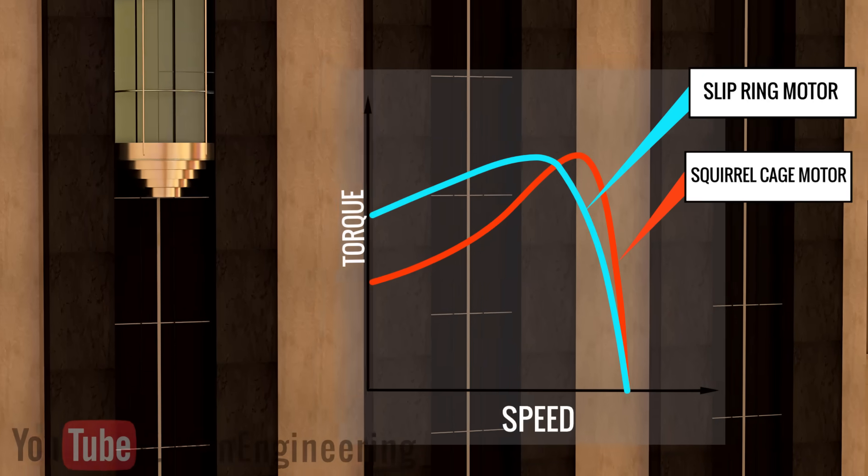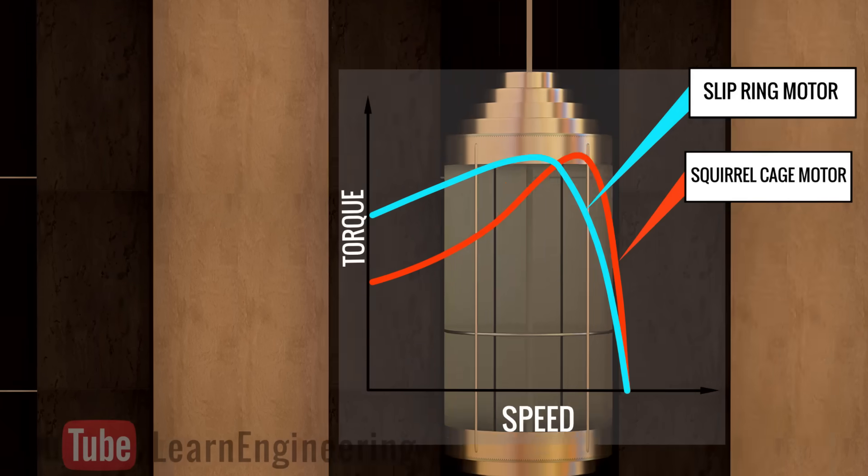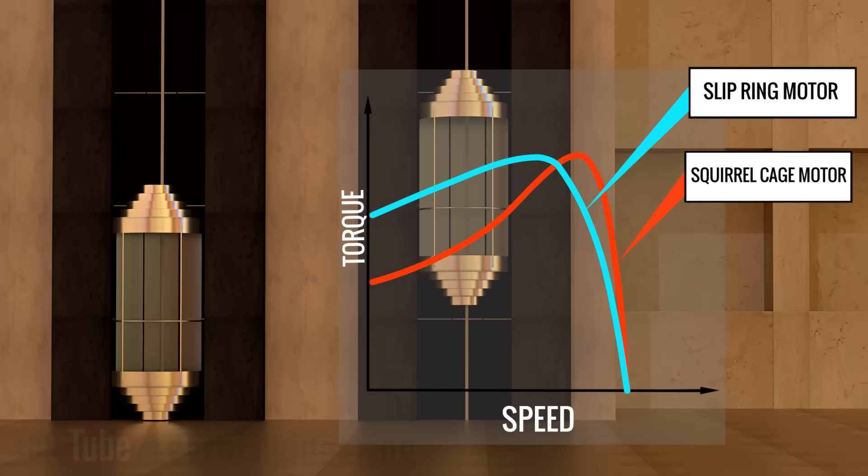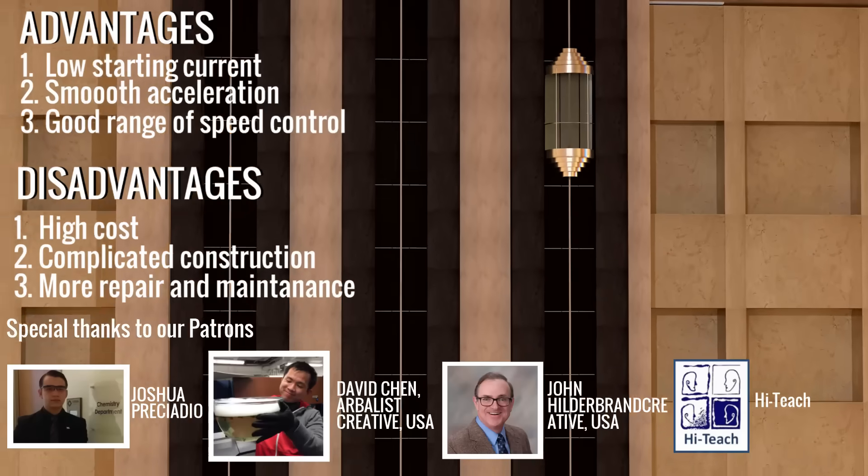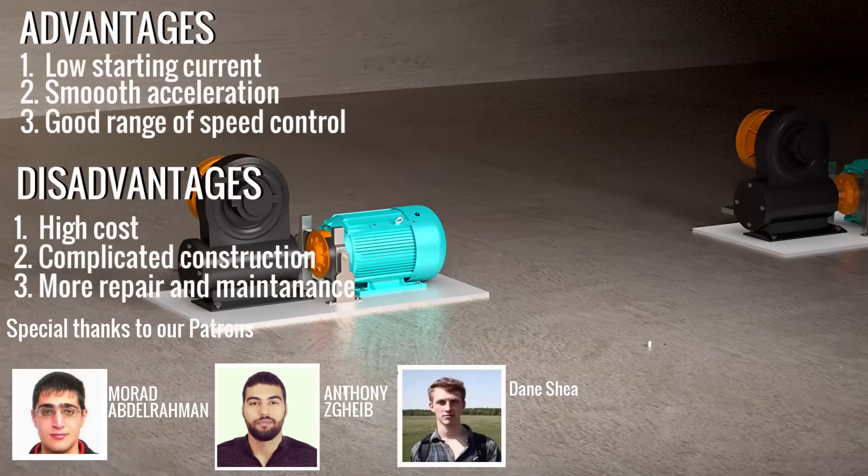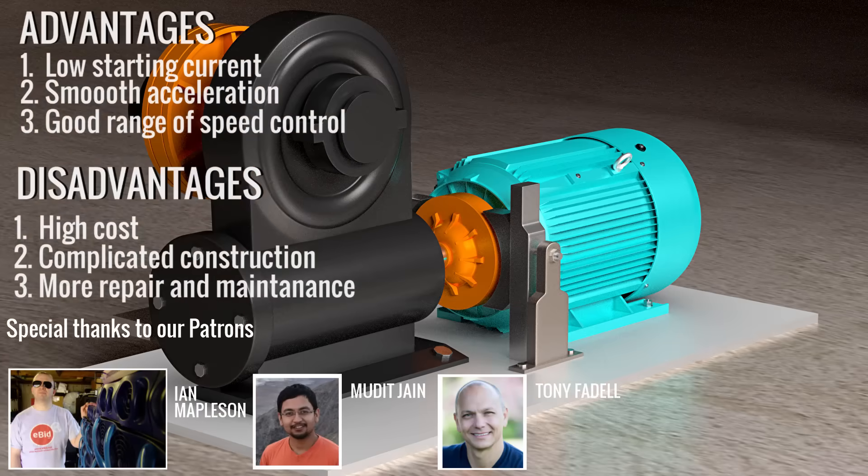Apart from the high starting torque, it also has some other advantages, and although slip ring induction motors have some disadvantages, they play a very important role in elevators, cranes, hoists, and in industrial uses such as printing presses.